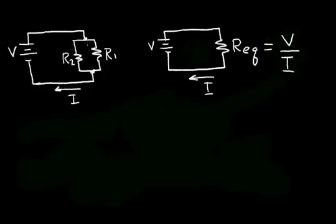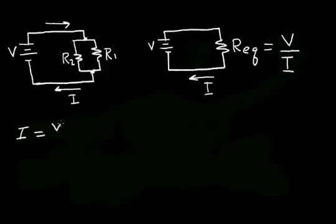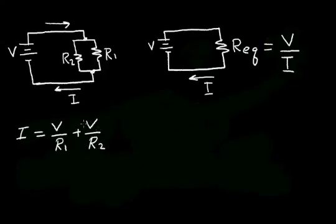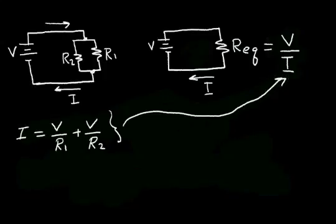The circuit on the left has a branch in the current. The current flowing from the battery is divided between R1 and R2. We can calculate the current in R1 and R2 and add them together to get the total current I. So I equals the voltage across R1 divided by R1, plus the voltage across R2 divided by R2. We can substitute this expression into the equation for R_eq.